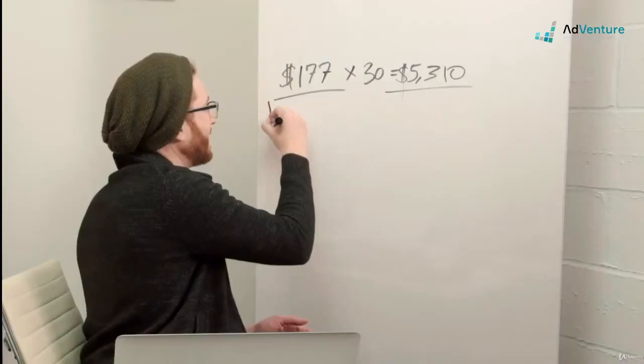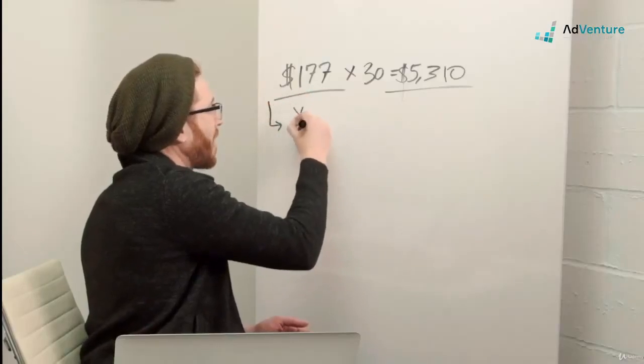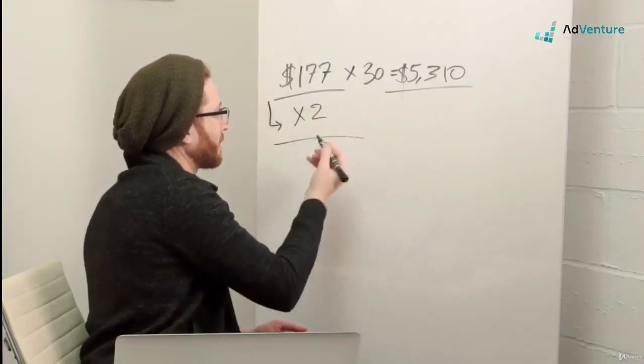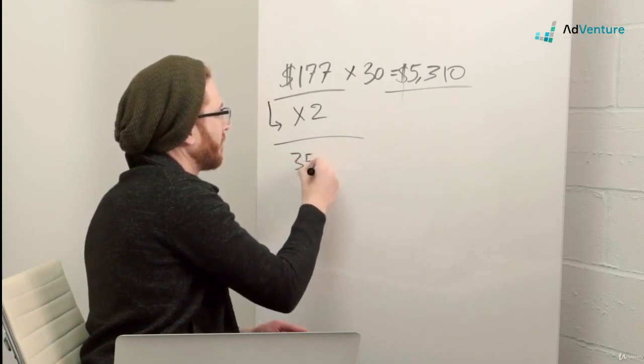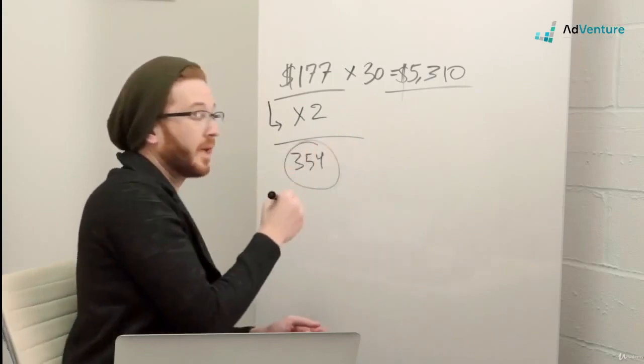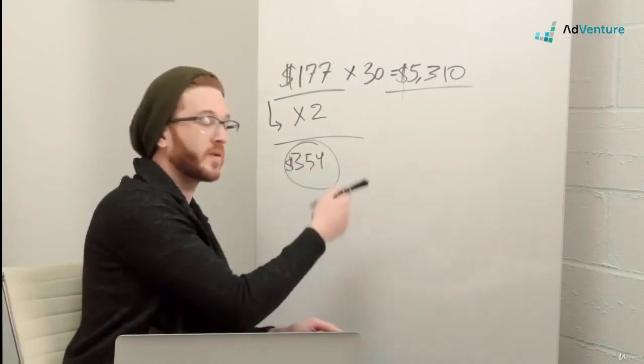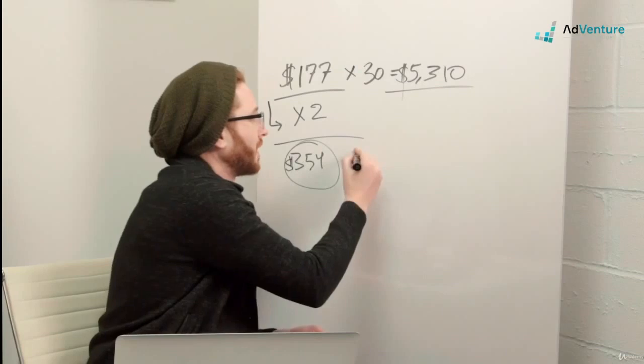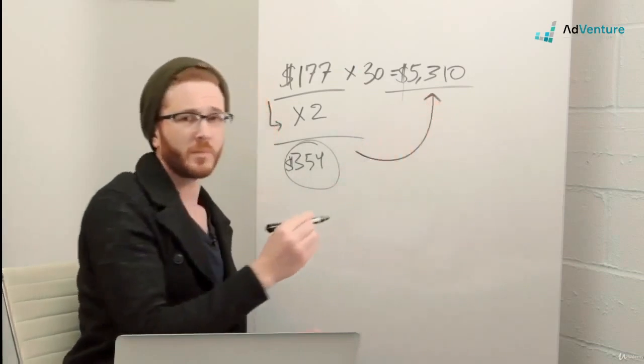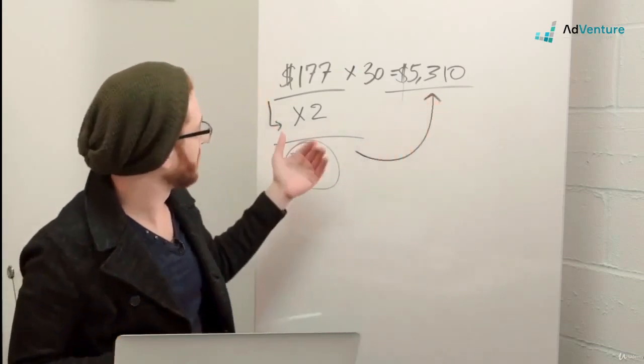But I could spend on any given day $177 up to double that, right? So that comes out to $354. I could spend $354 on any given day, but I won't spend $354 every day because then I'm going to greatly exceed my allotted budget for the course of the month.